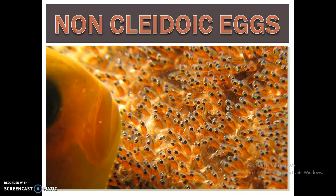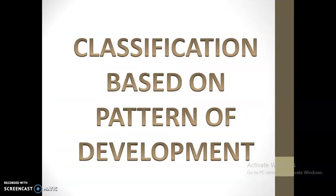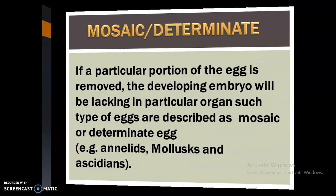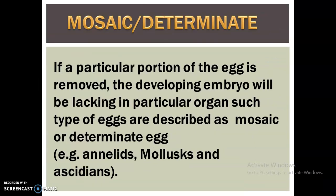Now the classification based on pattern of development. There are two types: mosaic or determinate, and regulative or indeterminate. In mosaic or determinate eggs, if a particular portion of the egg is removed, the developing embryo will lack a particular organ. Examples include annelids, molluscs, and ascidians.